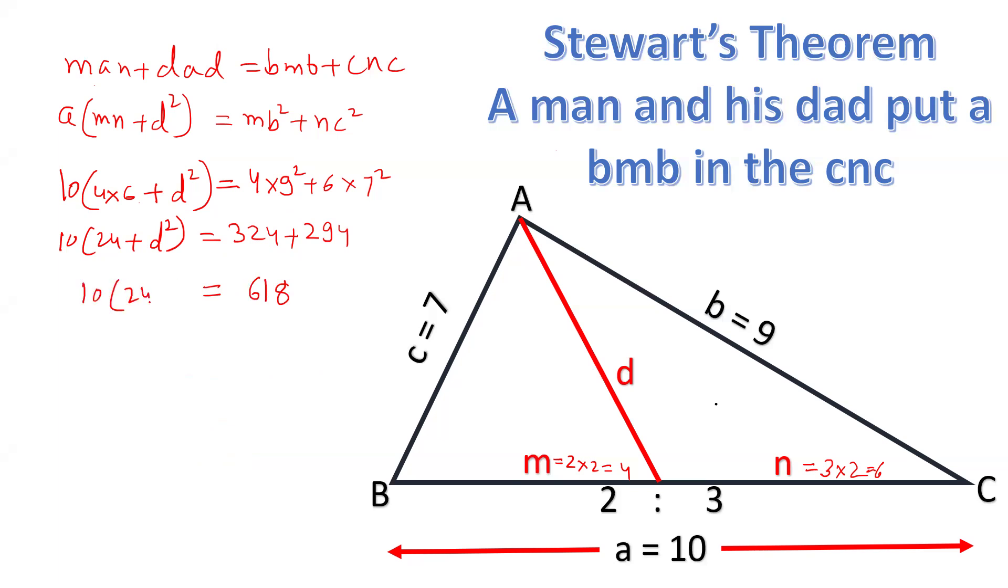So 24 plus d² equals 618 upon 10, which is 61.8.